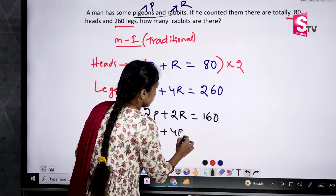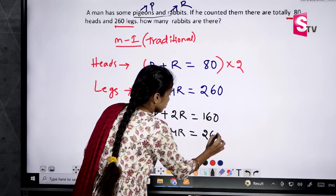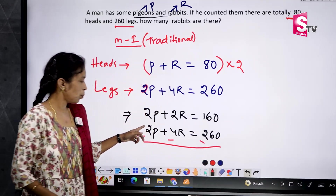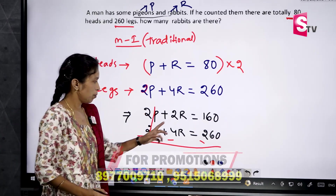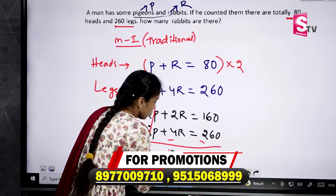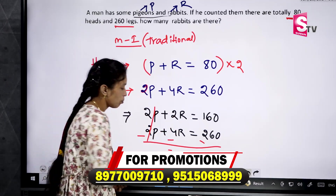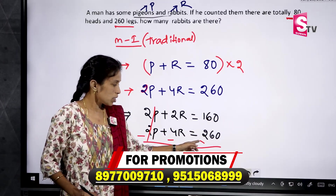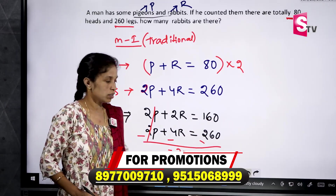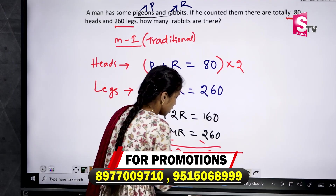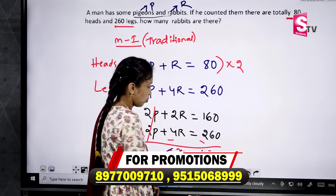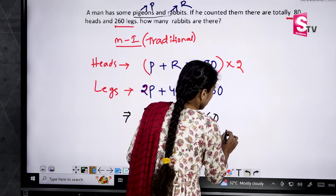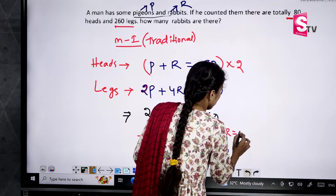Now subtract: 2P minus 2P cancels. Then 2R minus 4R gives minus 2R, and 16 minus 26 gives minus 10. So minus 2R equals minus 10, and cancelling the minuses, 2 ones are 2, 5 ones are 5 — we get R equals 5. Therefore there are 5 rabbits.